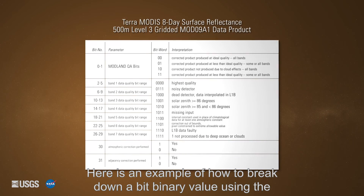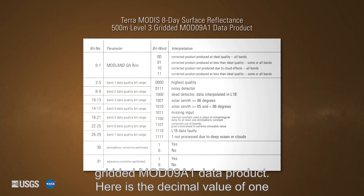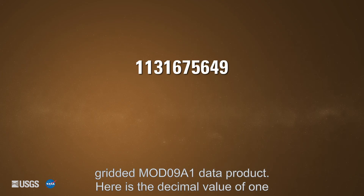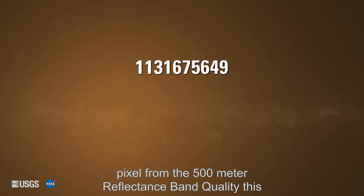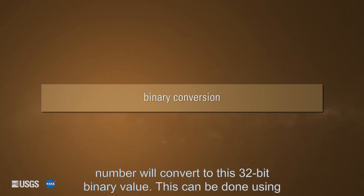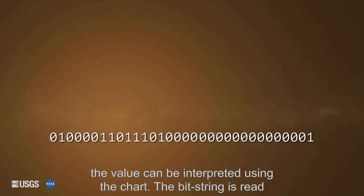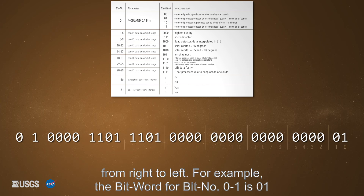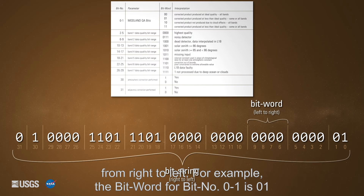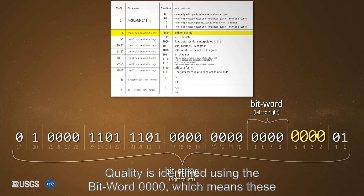Here's an example of how to break down a bit binary value using the Terra MODIS 8-day surface reflectance 500-meter level 3 gridded MOD09A1 data product. Here's the decimal value for one pixel from the 500-meter reflectance band quality. This number will convert to a 32-bit binary value, which can be done using a calculator or conversion tool. The bit string is read from right to left. For example, the bit word for bit numbers 0 through 1 is 01, meaning the corrected product was produced at less than ideal quality. Bit numbers 2 through 5, the band 1 data quality, is identified using the bit word 0000, which means these bands are highest quality.